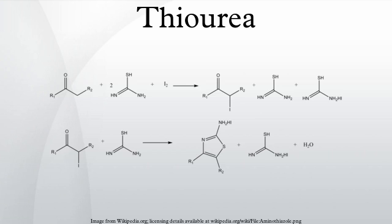In a specific example, ethanedithiol is prepared from 1,2-dibromoethane: C2H4Br2 + 2 SC(NH2)2 → [C2H4(SC(NH2)2)2]Br2; then [C2H4(SC(NH2)2)2]Br2 + 2 KOH → C2H4(SH)2 + 2 OC(NH2)2 + 2 KBr. Like amides, thiourea can also serve as a source of sulfide upon reaction with soft metal ions.